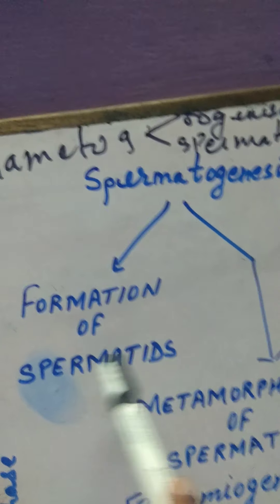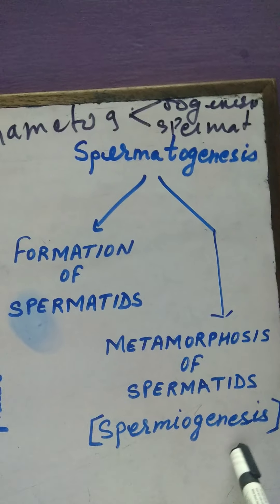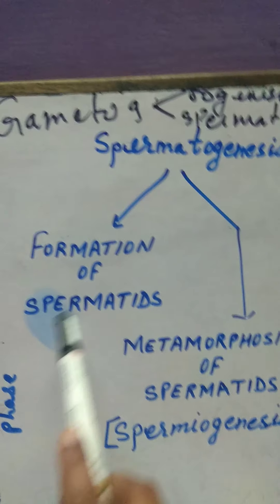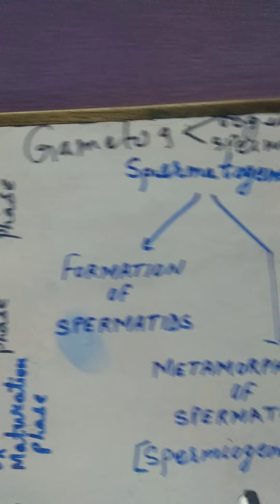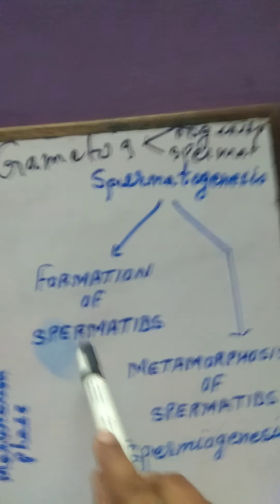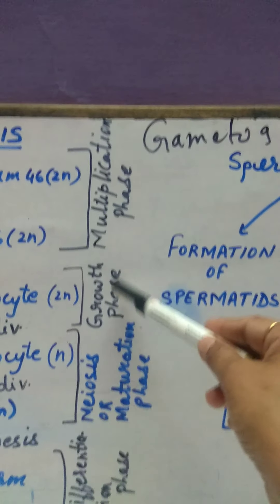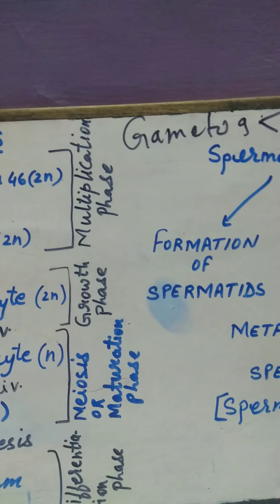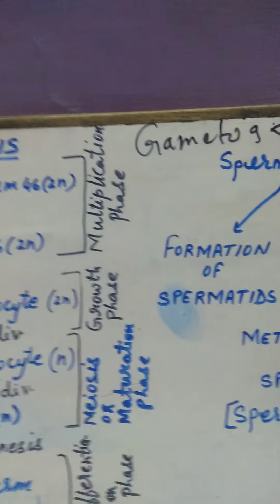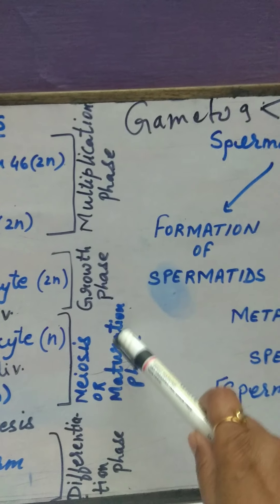The first stage is formation of spermatozoa and the second is metamorphosis of spermatozoa. In the formation of spermatozoa, three phases are involved: multiplication phase, growth phase, and maturation phase.